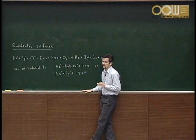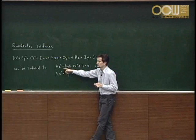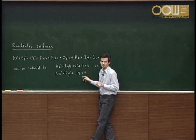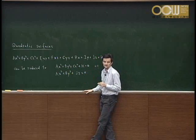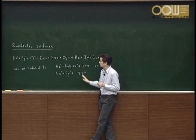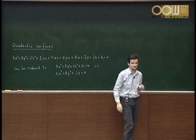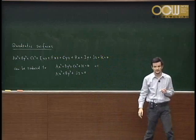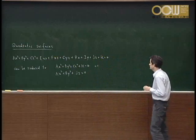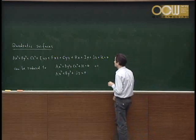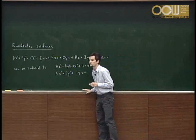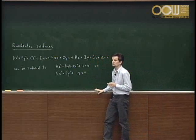We only need to consider cases where exactly one or exactly two of the coefficients are negative, because if you go on to three, you can just multiply by minus one and get the same types. So these are the only situations which we have to consider.